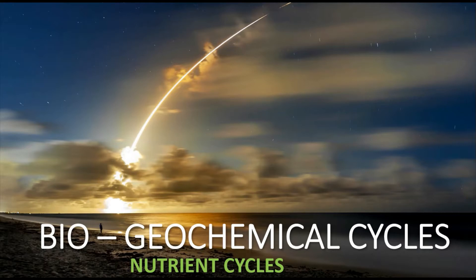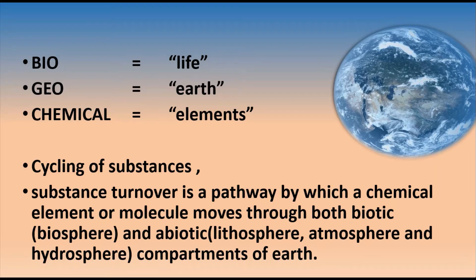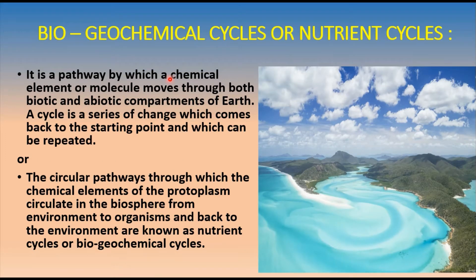We are going to discuss nutrient cycles or biogeochemical cycles. The 'bio' means life, the 'geo' means earth, and 'chemicals' means elements or minerals. Altogether, biogeochemical cycles are also called the cycling of substances — that is, cycling of nutrients or elements. In brief, substance turnover is a pathway by which chemical elements or molecules like nitrogen, potassium, carbon, hydrogen, and oxygen move through both biotic (biosphere) and abiotic compartments — the lithosphere, atmosphere, and hydrosphere — of the earth.